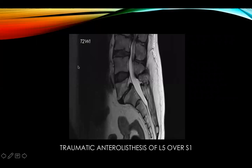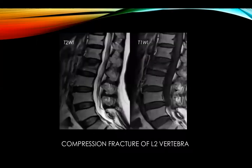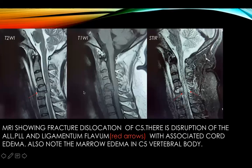The first case shows traumatic anterolisthesis of L5 over S1. In the second case, there is a compression fracture of the L2 vertebra with a dark sclerotic band, commonly seen in compression fractures, along with central wedging.